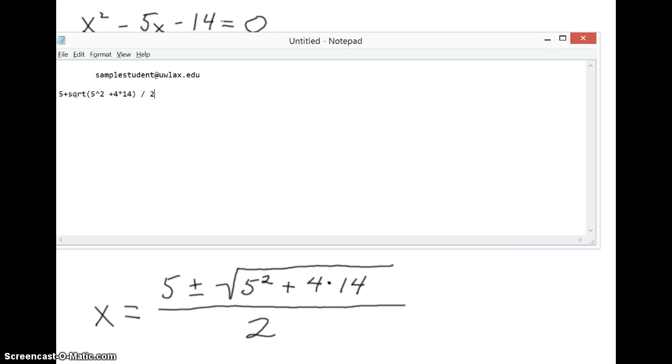Now there's something wrong with this answer as it's written right now because right here this division will occur before this plus. And that's not what we want. Here we have in the numerator, we have all this stuff. And that entire numerator is the thing that's divided by 2. So we're going to actually need to introduce a set of parentheses like that. Okay, so that would be one of the solutions.